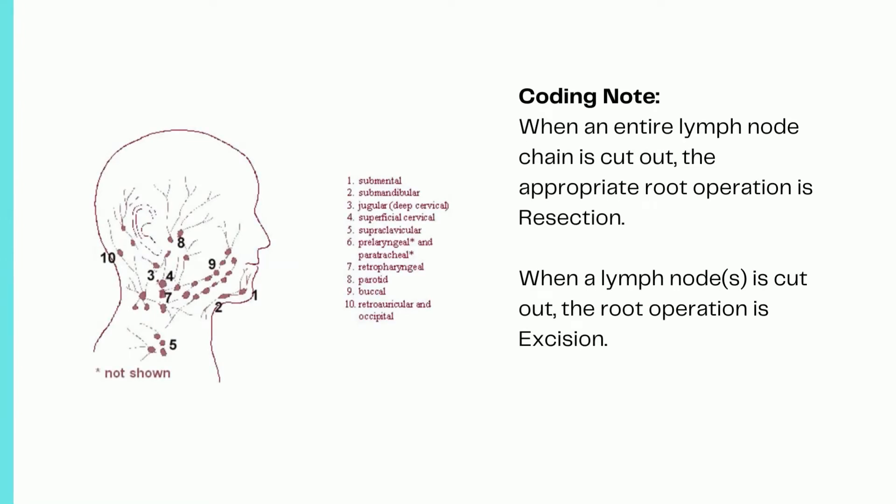An important point to remember is when coding for removal of lymph nodes and lymph node chains: one or two lymph nodes removed from an entire chain are coded as excision as the root operation, but if the entire chain of nodes is removed, then the root operation would be resection. This is a good example of physician query in ICD-10-PCS coding, which emphasizes the importance of complete documentation in the medical record.